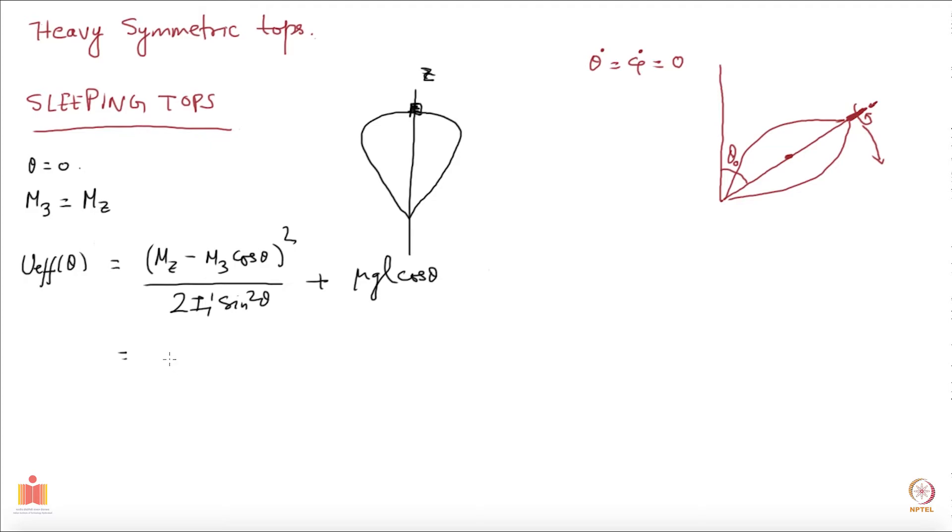You have (i3 omega 3)² and then you have 2i1 prime coming from the denominator. Then you have (1 - cos theta)² over sin square theta plus mu gl cos theta.